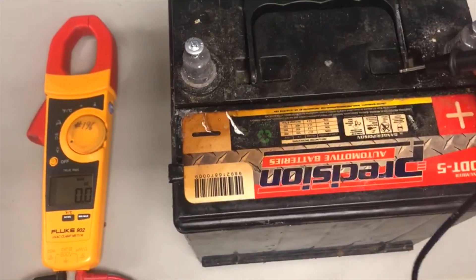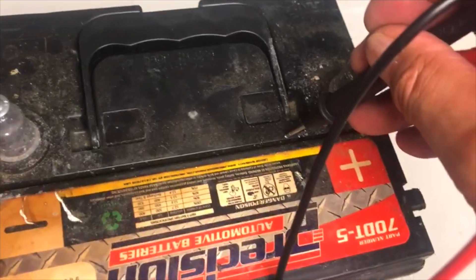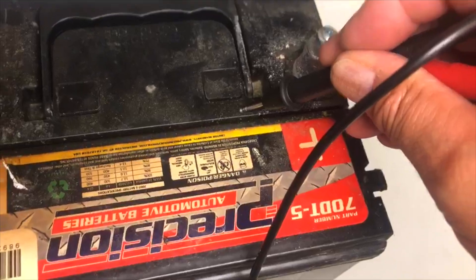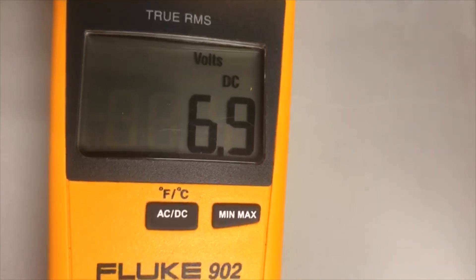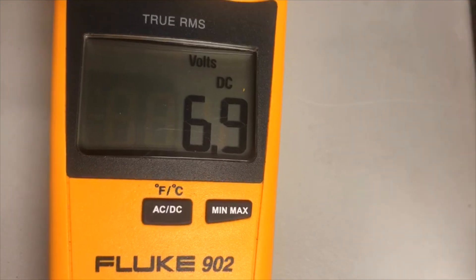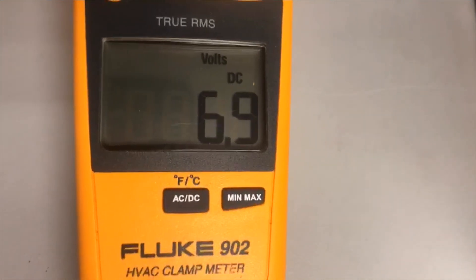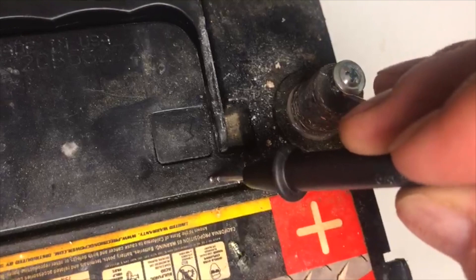If we go from the terminal here to the casing, the casing is made out of plastic. We're going straight to the casing. Because of this, we see that we're reading 6.9 volts on there. That tells me that this battery is losing some voltage constantly going straight to ground. We should not get anything.